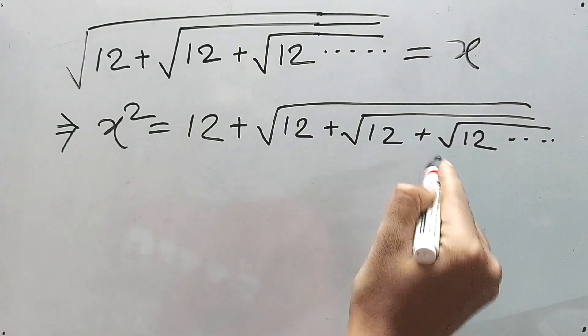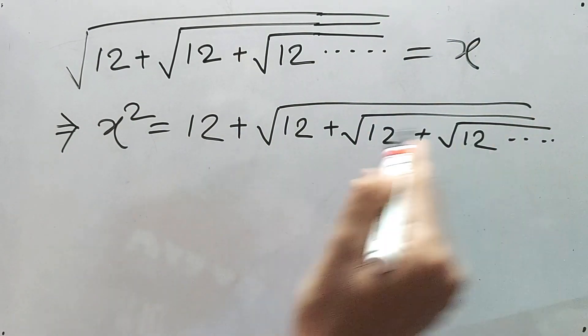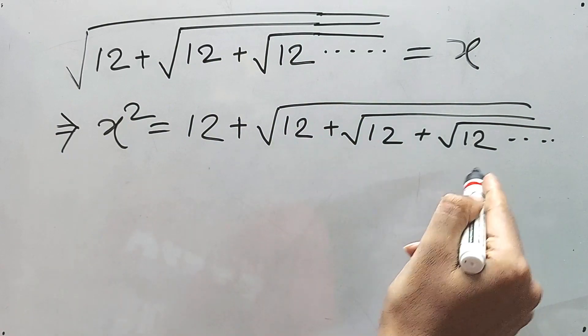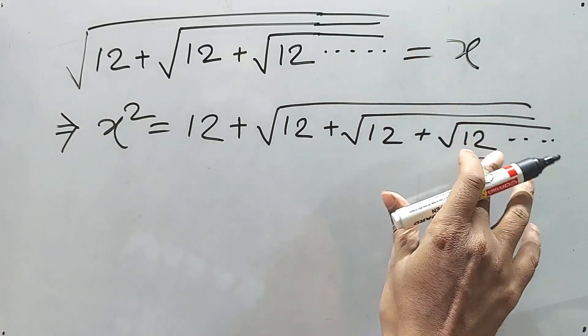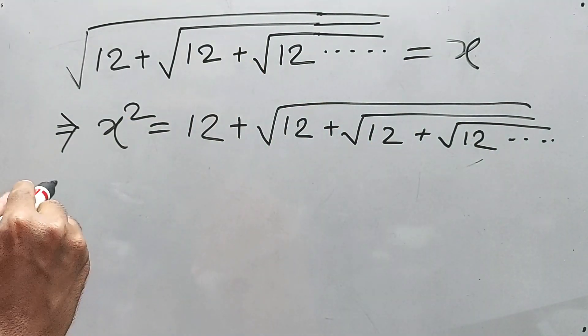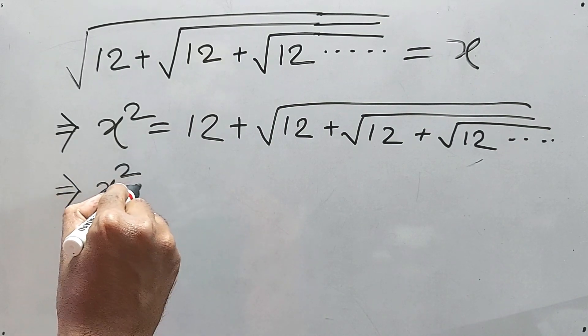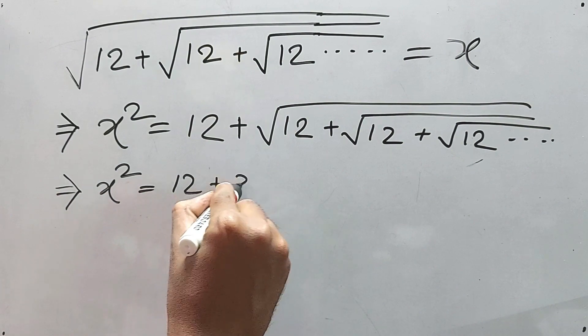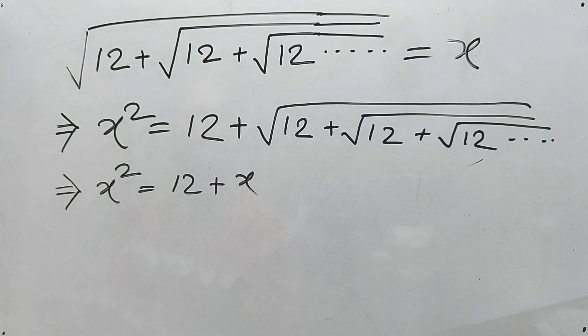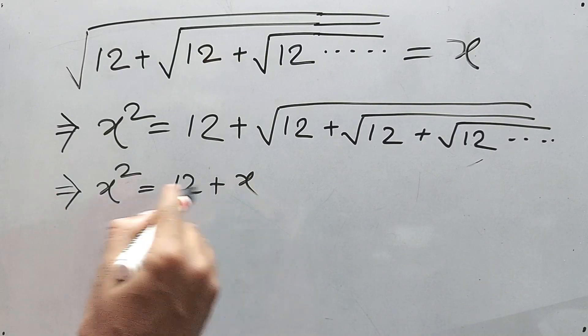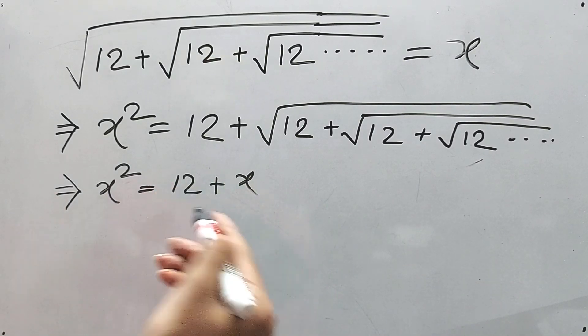Now see, again this one is equal to x because this is up to infinity. This one is also infinity, this one is also infinity, so this one equals x, right? Therefore, it is clear that x² equals 12 plus x. Simple, no need to worry.